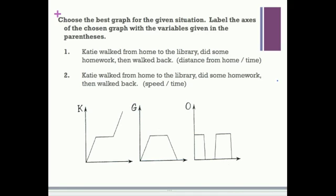Now we can move on to the last section of our notes. Here we're going to take a look at a couple scenarios and try to match them with the graphs below. The two scenarios we have are Katie walked from home to the library, did some homework, then walked back. But in this case, we're going to compare distance from home versus time. In the second example, we're going to look at Katie walked from home to the library, did some homework, and then walked back. Same scenario, but this time we want to compare speed to time. In our first example, we're comparing distance from home to time. So let's take a look at the scenario. Katie walks from home. That means she starts at home. She starts at zero. She walks to the library. She's walking away from the house. As time increases, she's getting farther away. That's going to be a positive correlation. It's going to be heading up. So we can eliminate O for number one.